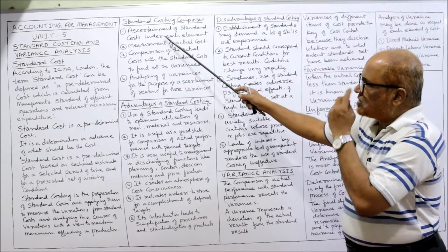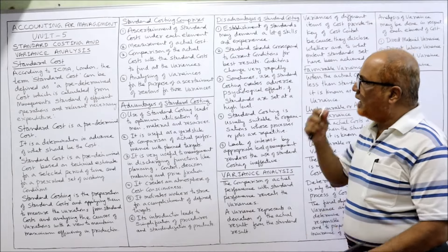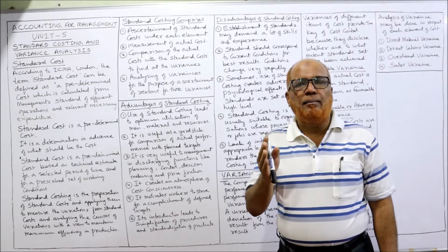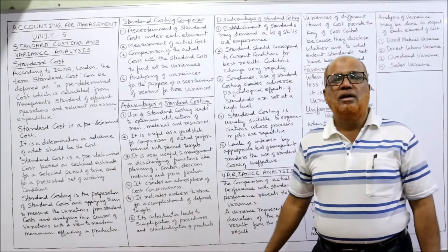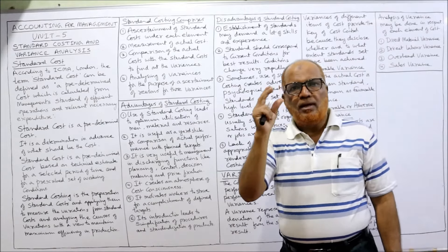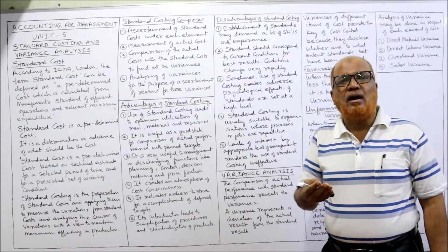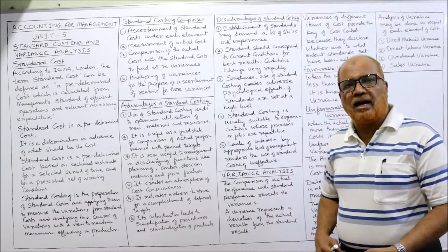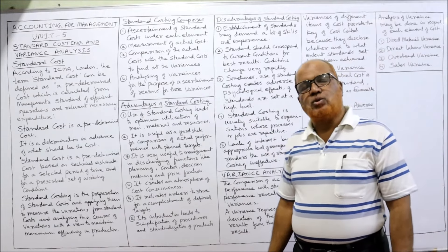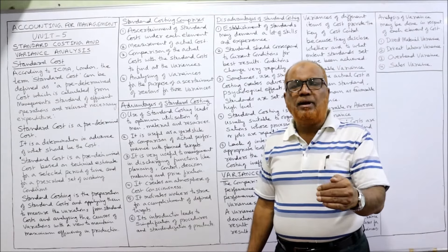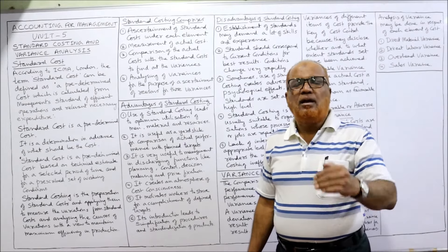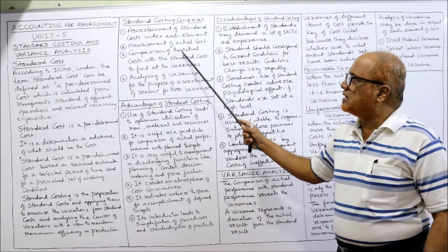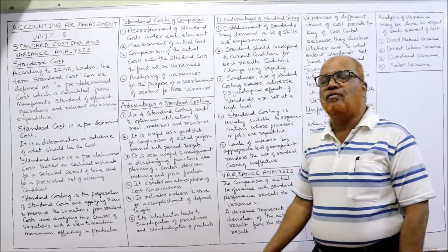Standard costing comprises four things. First: ascertainment of standard cost under each element of cost — the management has to predetermine the cost for every element of cost, which are material cost, labor cost, and overheads. Second: measurement of actual cost — we have already determined the cost in advance, now we incur the actual cost. Third: comparison of actual cost with the standard cost to find out the variation.